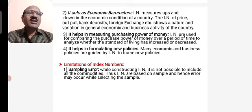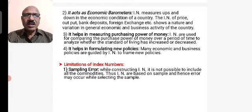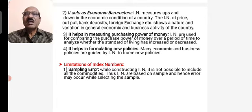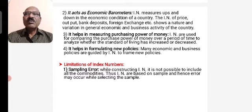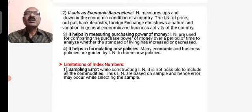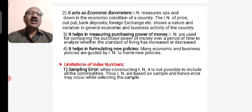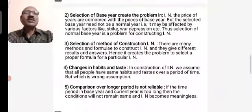While constructing index numbers, it is not possible to include all commodities. For instance, if you consider the cost of living, relevant costs include food, clothing, and rent. The index number is calculated from a sample of important commodities, and if sampling is not done properly, it will not give the proper result. The selection of the base year creates a problem.